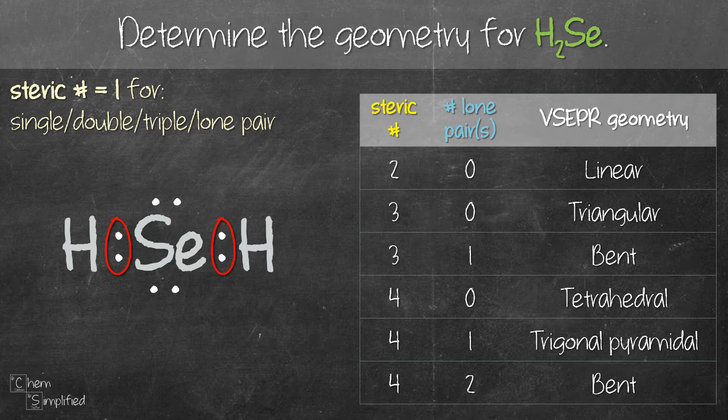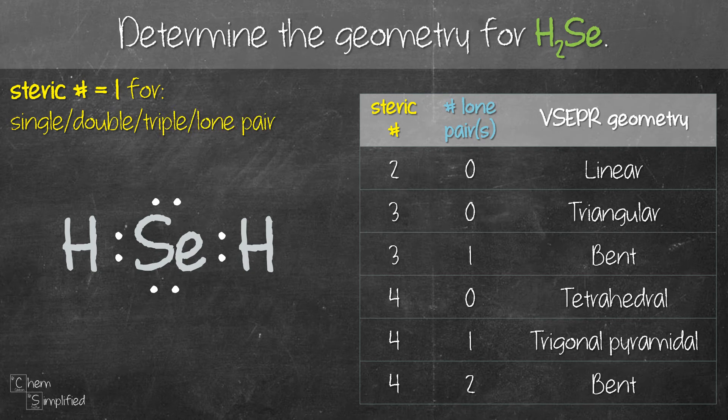We have two single bonds and two lone pairs surrounding Se. Keep in mind that single and lone pair each contributes to one steric number. So we have two single bonds, that's two steric number.